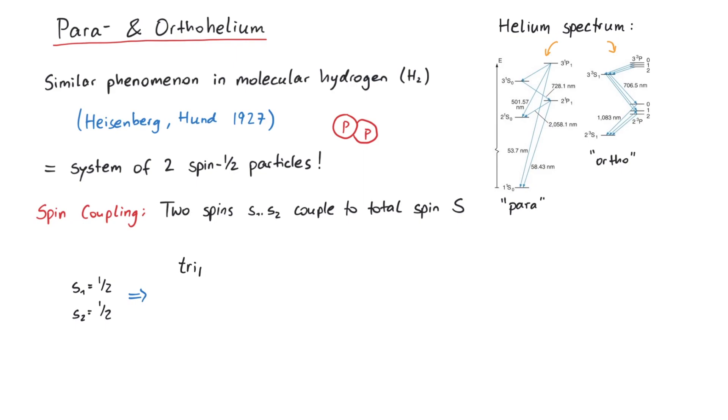The triplet state, where the total spin is one, and the singlet state, where the total spin is zero. The triplet state comes in three variations, depending on the choice of the magnetic quantum number ms, whereas there is only one singlet state, since in this case ms is always zero.